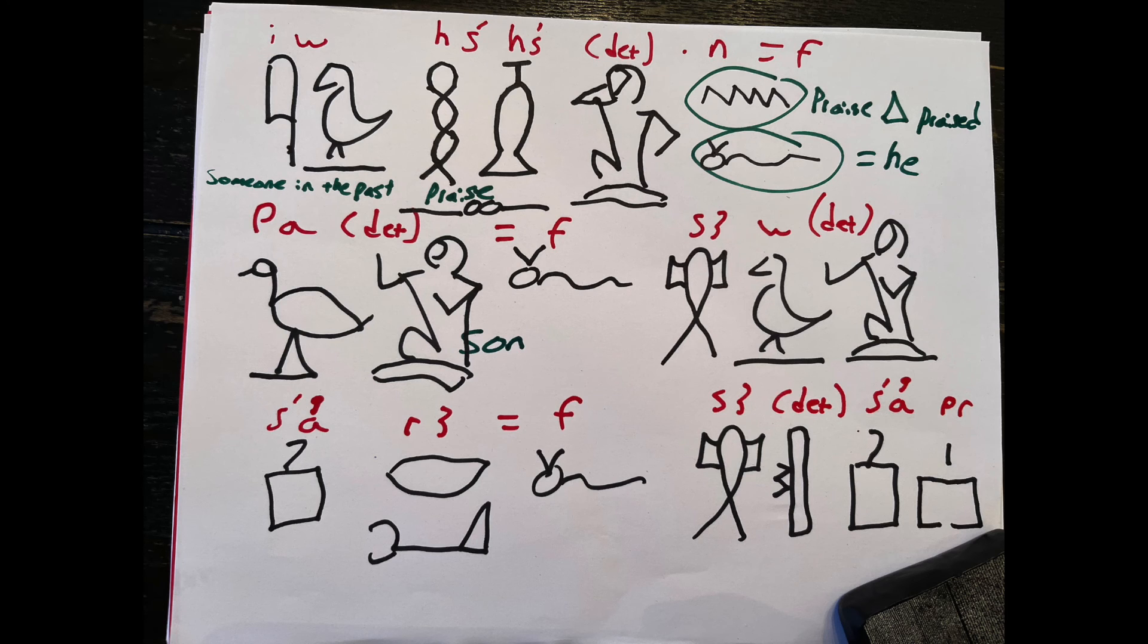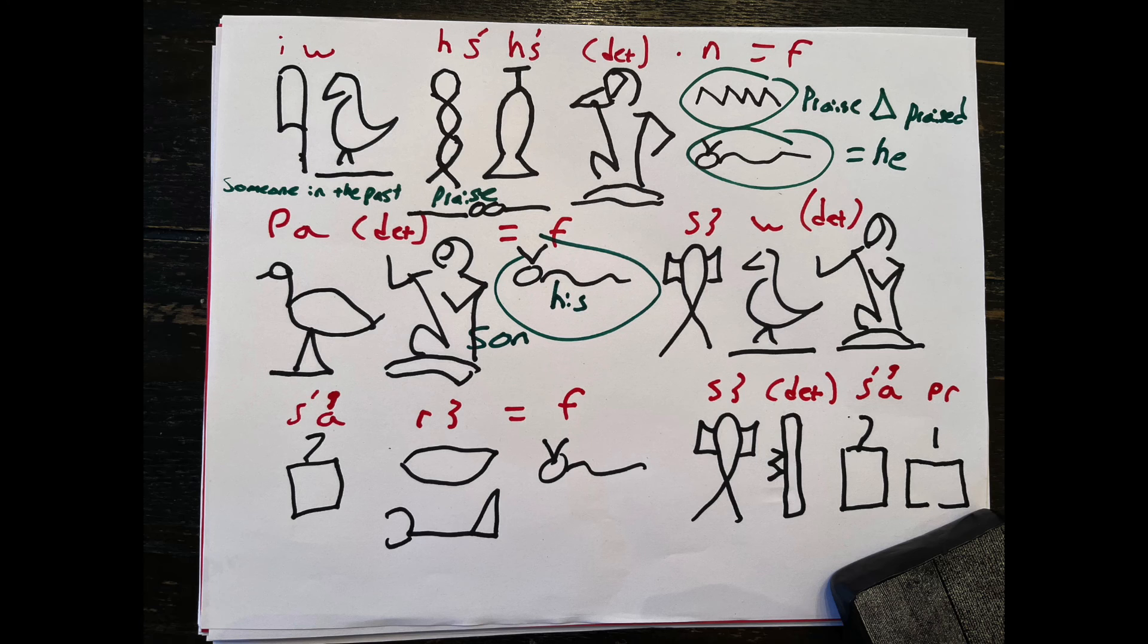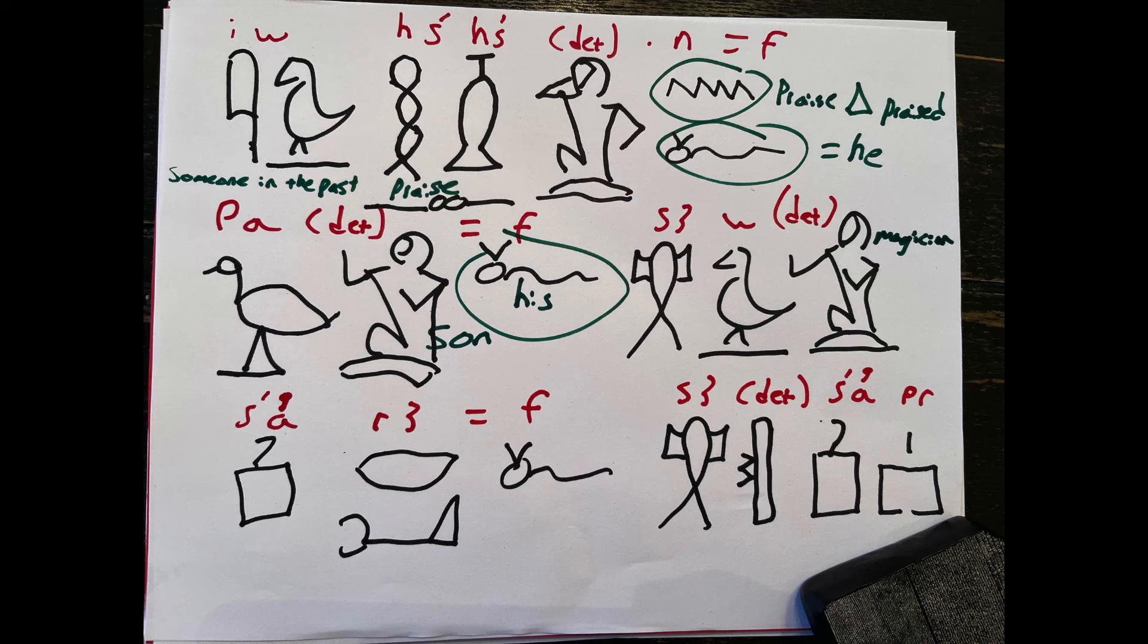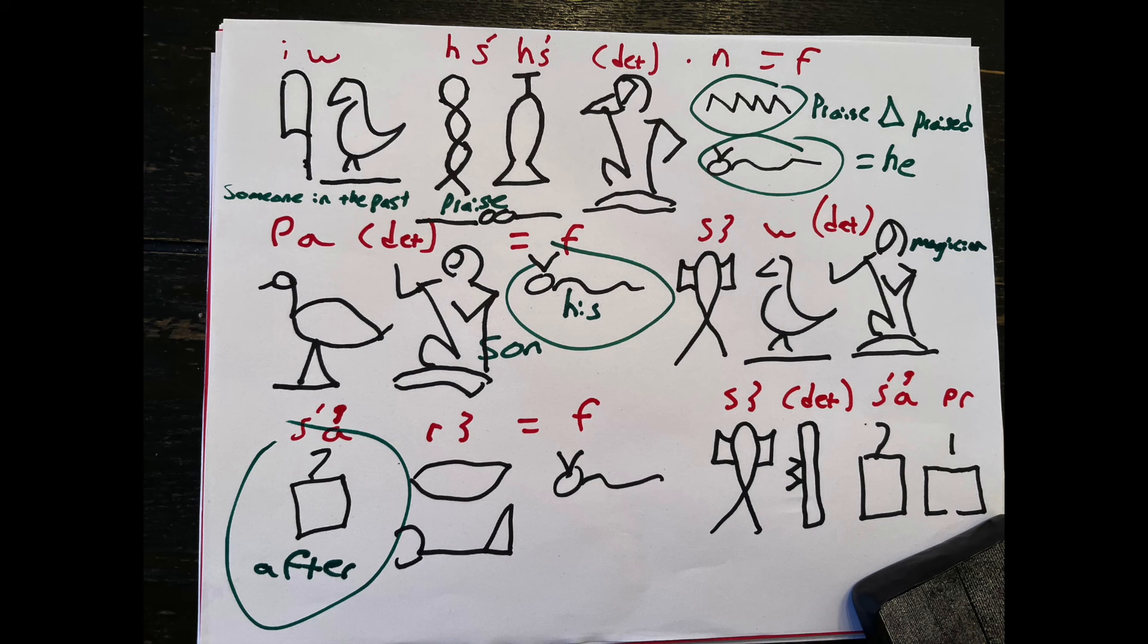Next up, the first word on the second line, pa, is son. We have the pintail duck followed by the determinative of a man sitting. Then again, we have his, the pronoun of the horned viper, f, so his son. And what is his son and who is he? We've got a word from last week, which is magician, sau. This could be a magician or the magician based on the context clues of the sentence because there's no articles in ancient Egyptian.